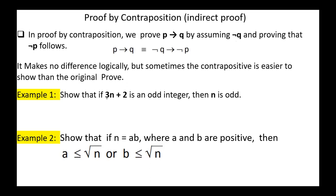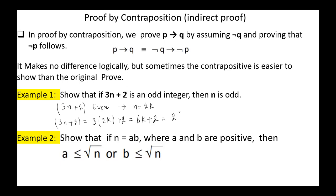Example 1: Show that if 3N plus 2 is an odd integer, then N is odd. We start by assuming 3N plus 2 to be even. This implies that N equals 2K for some integer K. So 3N plus 2 equals 3 multiplied by 2K plus 2, which is 6K plus 2, or 2(3K plus 1). So 3N plus 2 is even. Since the negation of the conclusion implies the negation of the hypothesis, the original conditional statement is true — which means that if 3N plus 2 is even, N is even, hence proved.